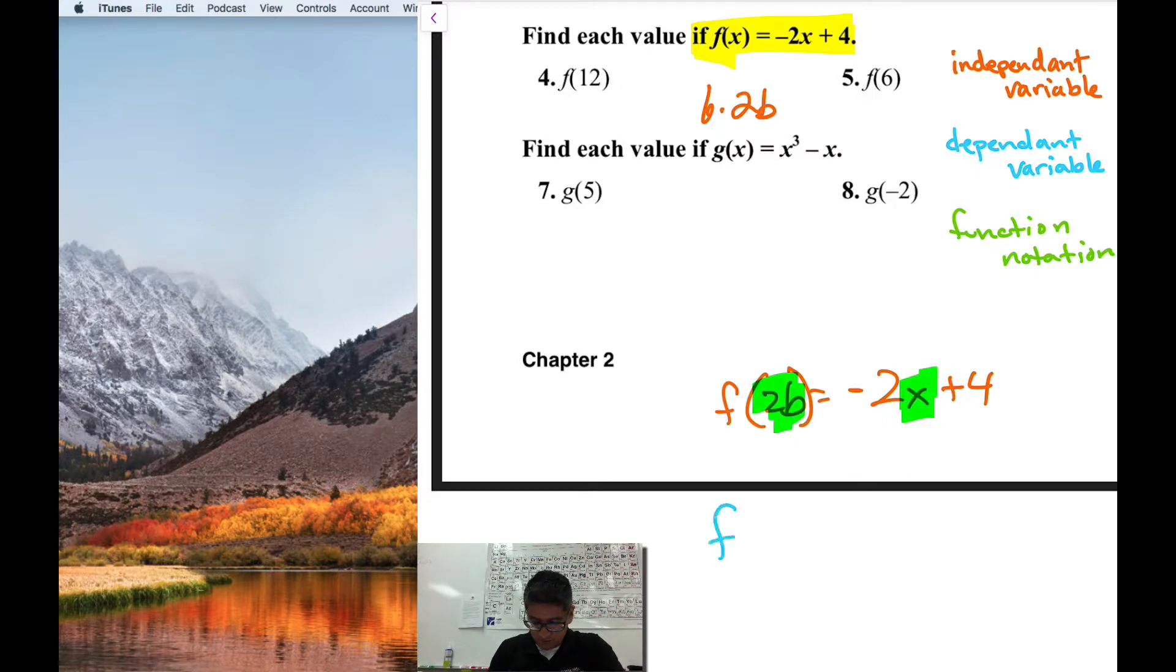So this new function, the function as it pertains to 2b, is now going to be rewritten as negative 2 times 2b plus 4. So at this point again, I work it out like I normally do. So negative 2 times 2b is negative 4b plus 4.